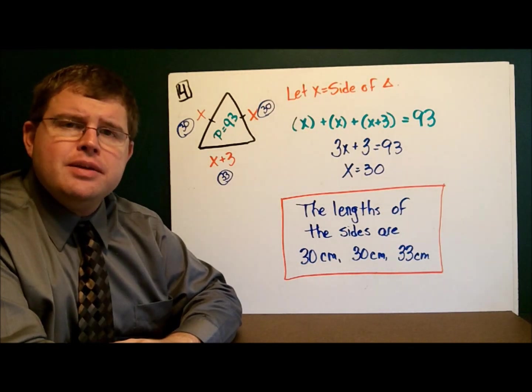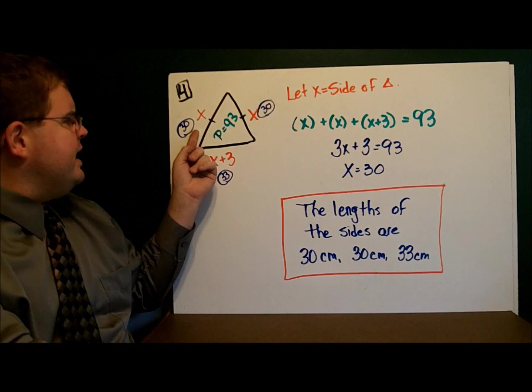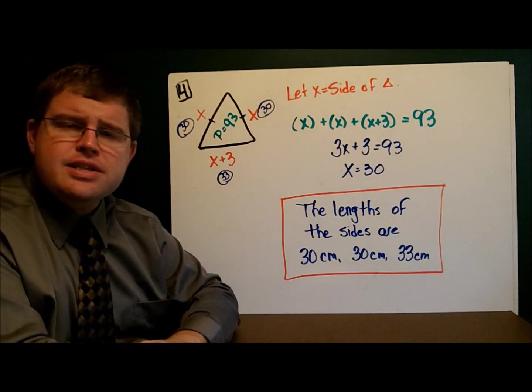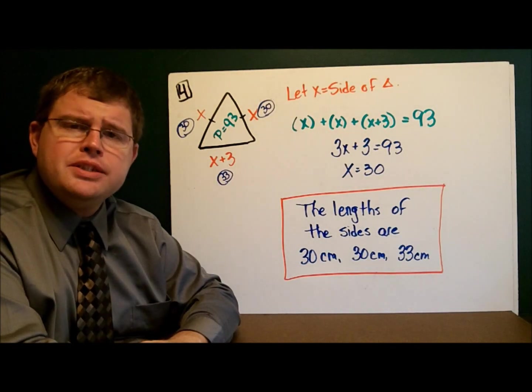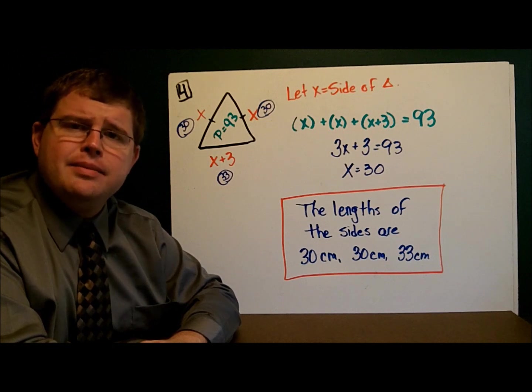Now let's determine the dimensions. This side is 30. This side is 30. This side down here is 30 plus 3. So it's 33. So the triangle has dimensions of 30 centimeters, 30 centimeters, and 33 centimeters.